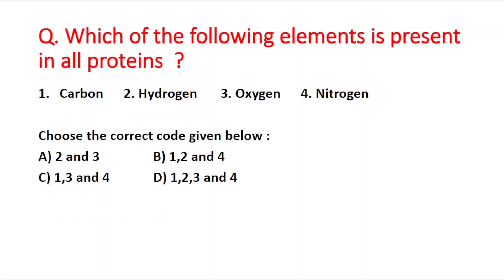Next question: which of the following elements is present in all proteins? The options include carbon, hydrogen, oxygen, and nitrogen. The right answer is option D — all these elements (carbon, hydrogen, oxygen, and nitrogen) are present in all proteins.